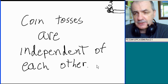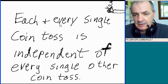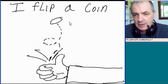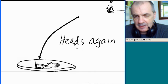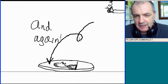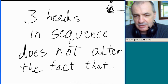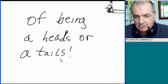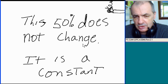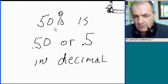Coin tosses are independent of each other. Each and every single coin toss is independent of every single other coin toss. I flip a coin — heads. I toss again — heads. Three heads in a row. Three heads in sequence does not alter the fact that the next toss of the coin still has a 50-50 chance of being heads or tails. It doesn't change that fact. So this 50% does not change — it is a constant.